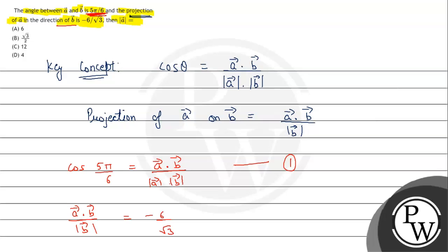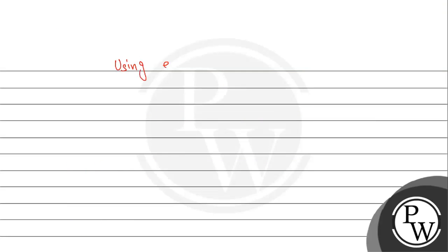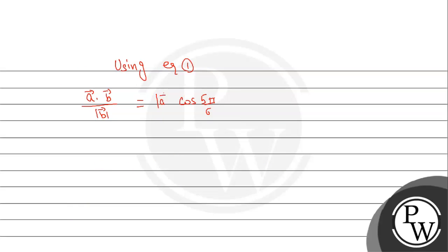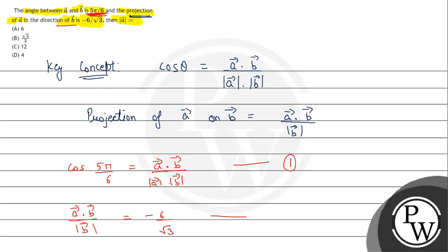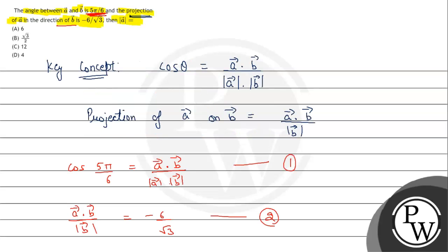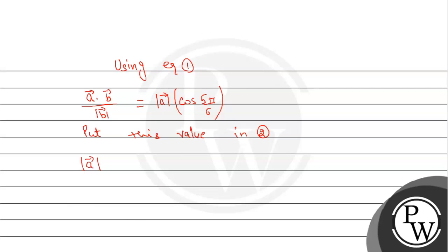Now, using equation 1, A dot B upon magnitude of B ki value find out karenghe. From equation 1, A vector dot B vector upon magnitude of B vector equals cos(5π/6) into magnitude of A vector — let this be equation number 2. Put this value in equation 2: A dot B upon |B| equals |A| into cos(5π/6), which equals minus 6 upon square root of 3.